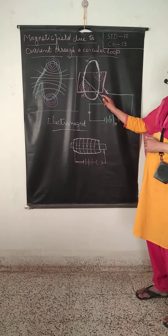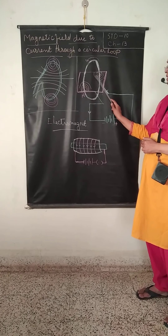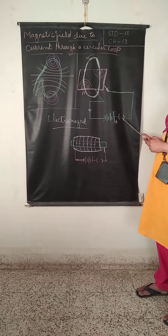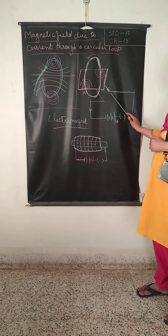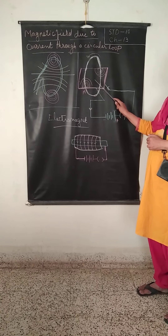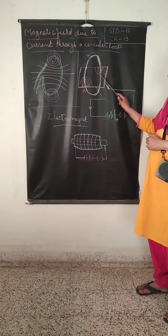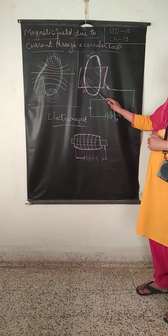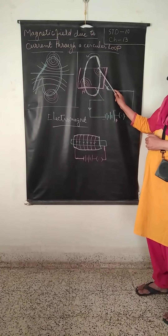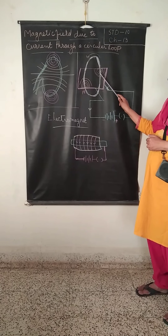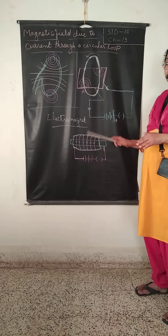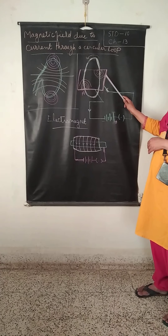Add some iron filings on the cardboard, then press the key so that electricity will pass. Tap the cardboard and you can see concentric circles at the edge of the conducting wire formed by the iron filings.